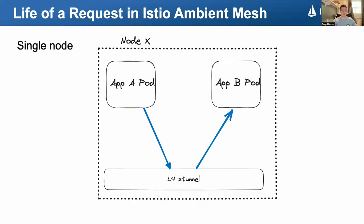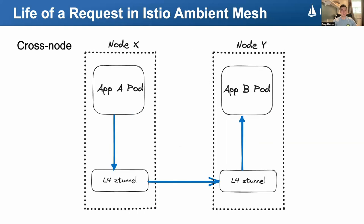Let's take a look at a nice simple request in Ambient. Pod A calls pod B. The traffic is redirected to the node local Z-Tunnel. The Z-Tunnel instance sees the destination is on the same node and the request is proxied to B. And what happens if the destination is on another node? Well, the client local Z-Tunnel sends the request to the destination's co-located Z-Tunnel, who then forwards to B. Boom. All done. Talk over — I can give everyone a few minutes back to their day.